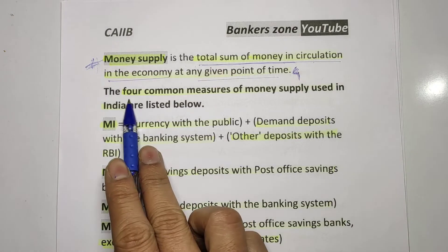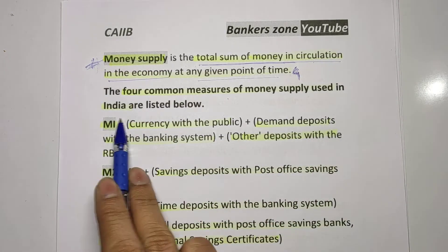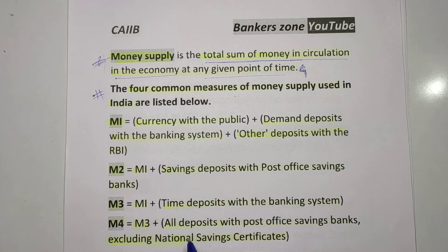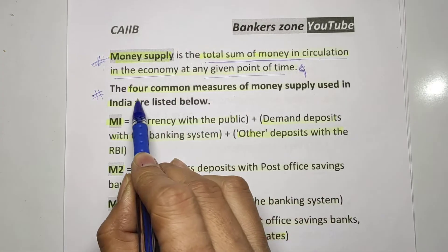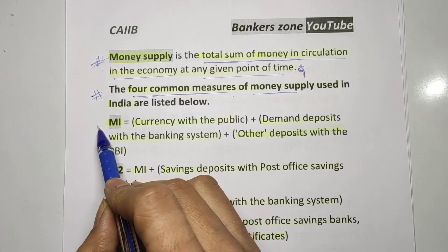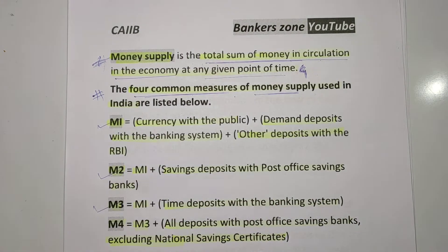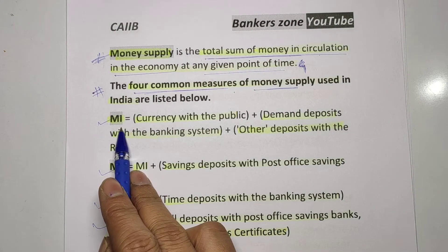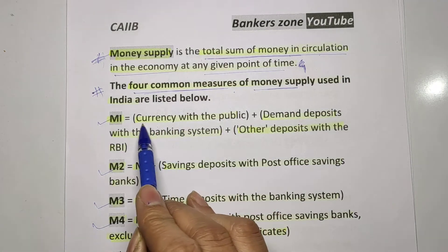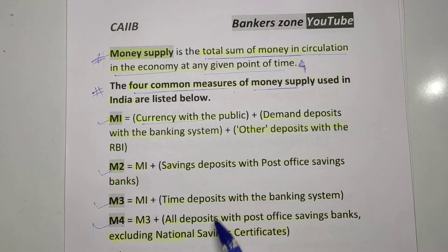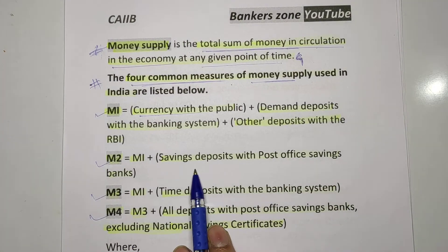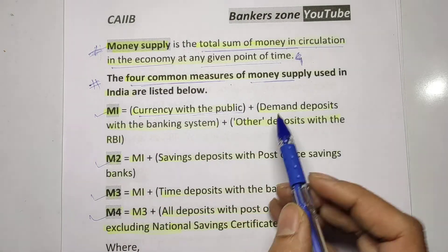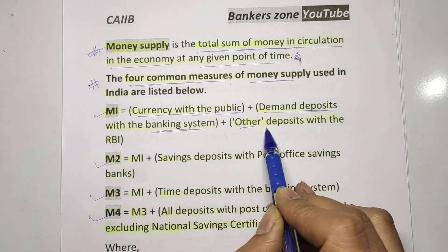Now, what are the four common measures of money supply used in India? This is very important — IIBF generally asks numerical or case-study questions based on this. The four measures are M1, M2, M3, and M4. M1 is currency with the public plus demand deposits with the banking system plus other deposits with the RBI.